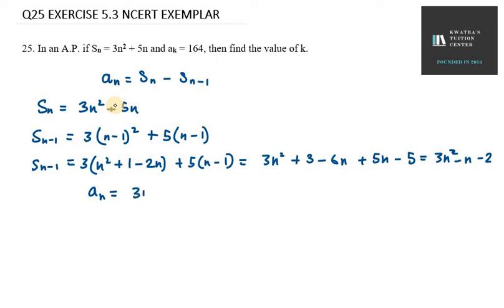The Sn value will be 3n squared plus 5n minus Sn minus 1, which is 3n squared minus n minus 2. It will be 3n squared plus 5n minus 3n squared plus n plus 2.